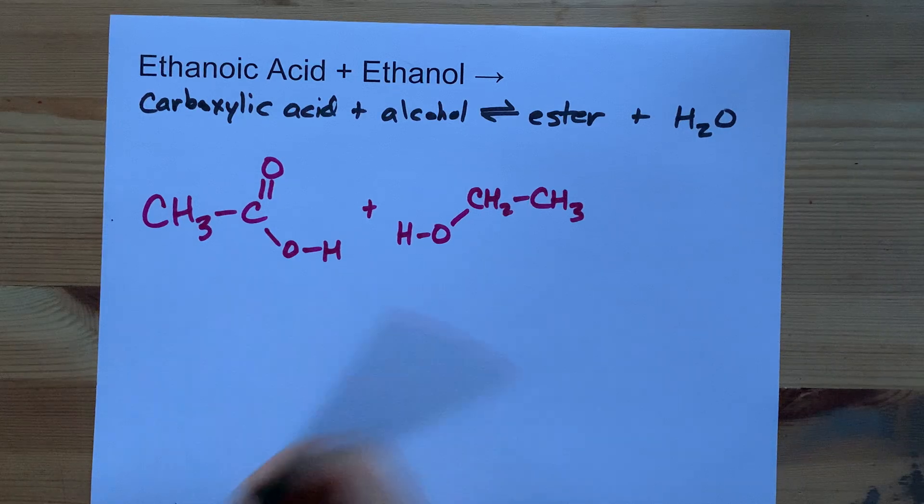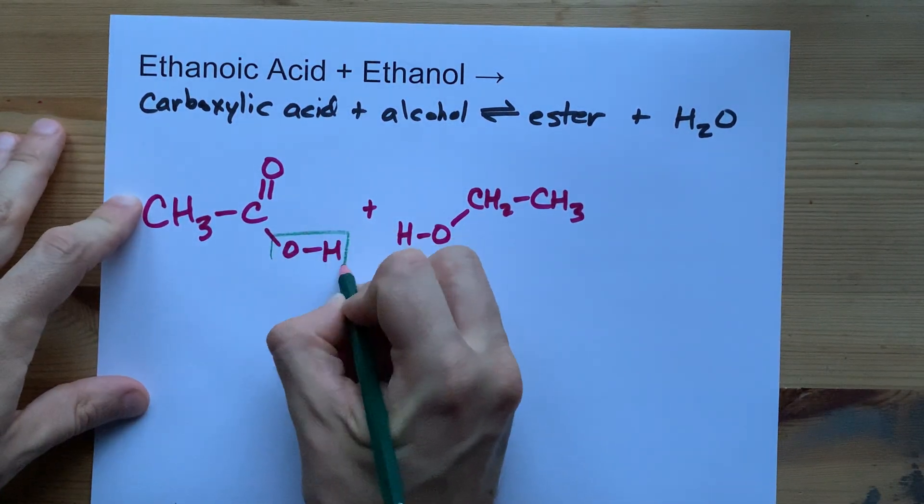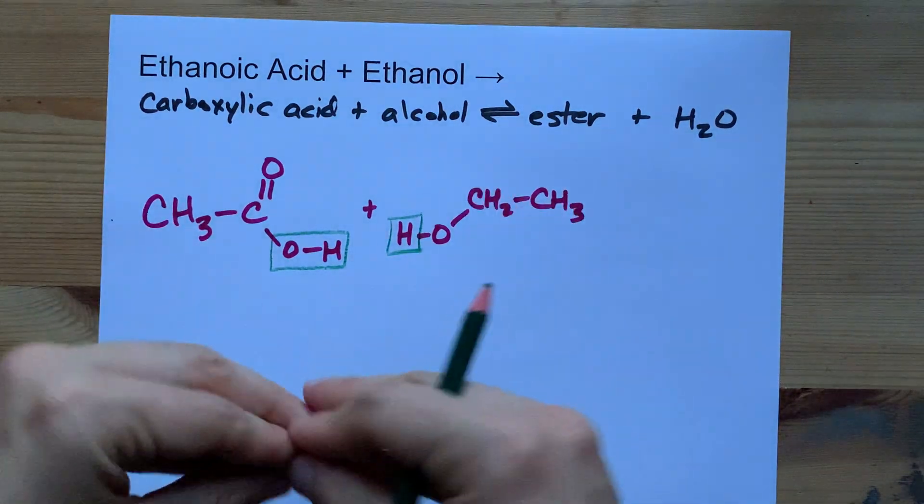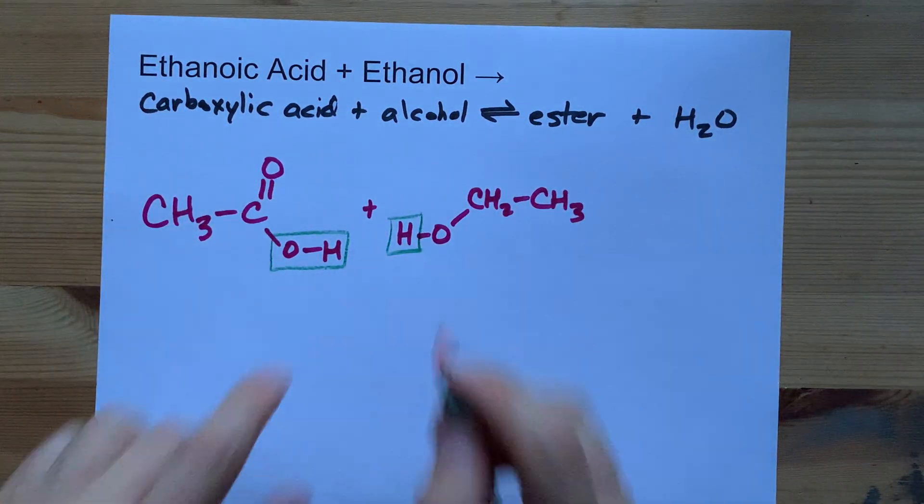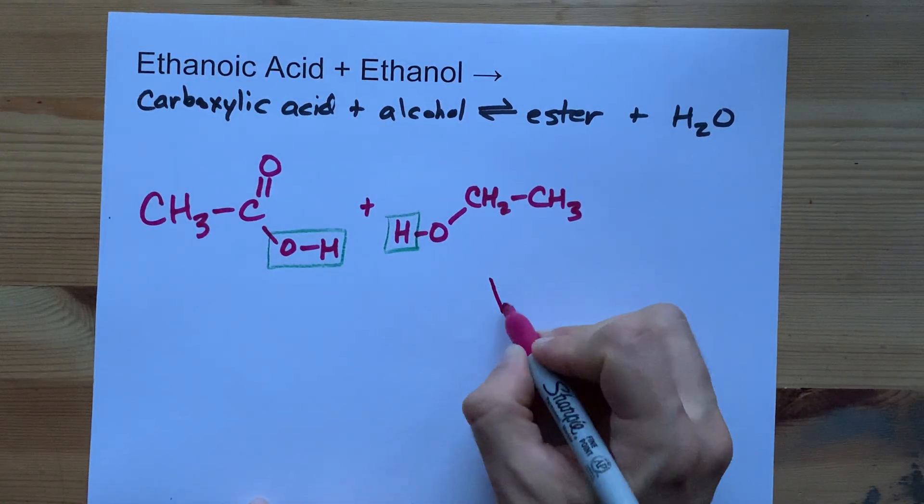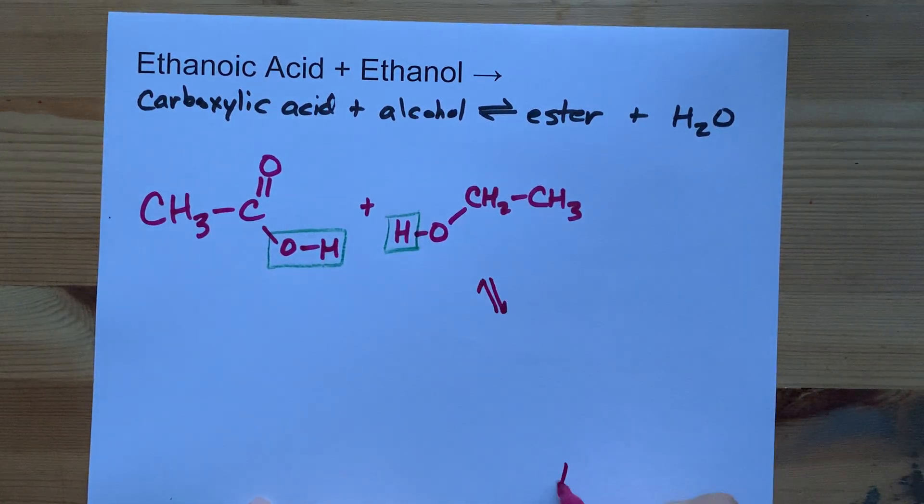What happens when these react together is that this OH and the H from the alcohol, in like a five-step process, end up together. So that is what gives us our water byproduct.